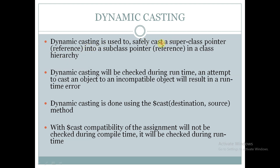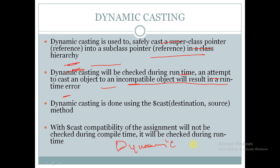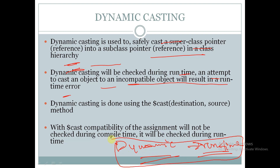Dynamic casting is used to safely cast a superclass pointer into a subclass pointer in a class hierarchy. Dynamic casting is checked during runtime, and an attempt to cast an object to an incompatible type will result in a runtime error.